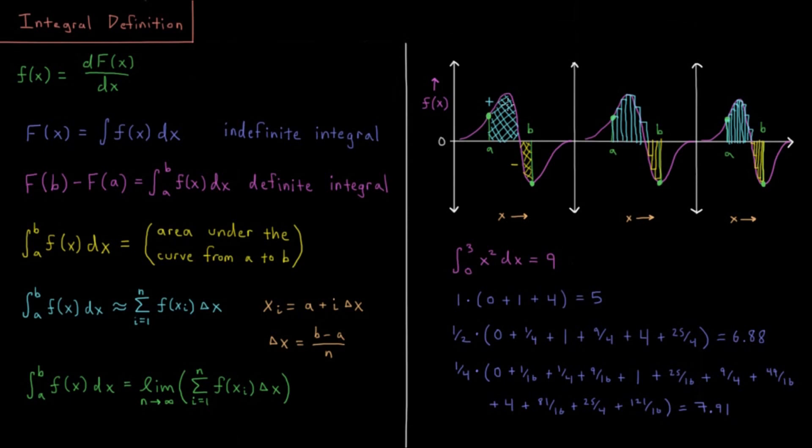Alright so this seems like it might be a fairly complicated operation in general to get what the area under this curve is. So what we can do is we could say that this integral is approximately a sum from i equals one to n, so we're going to have n little regions here, of the value of the function f of xi, so the value at some point, times delta x, times the width of this region.